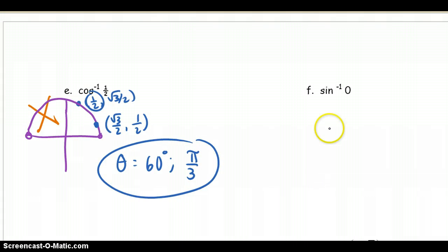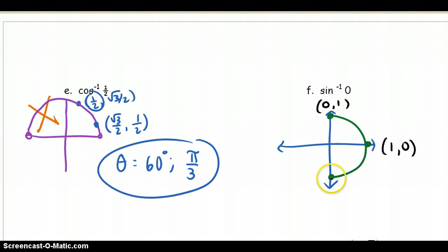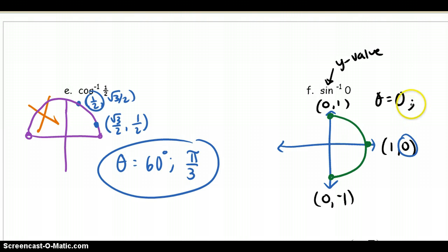What's the sine inverse of 0? Sine is linked to quadrants 1 and 4. At 0 degrees the point is (1, 0), and at negative 90 degrees it's (0, negative 1). Since sine is the y value, at what angle is the y value 0? That's at theta equals 0 radians or 0 degrees. We can't say 2π because the limitation is between negative π over 2 and π over 2, and 2π is not between those two numbers.